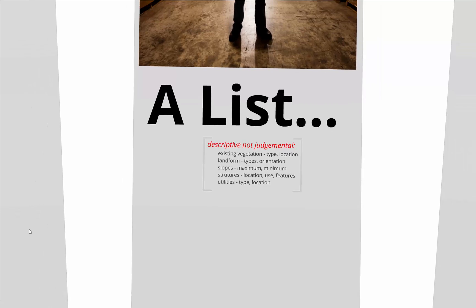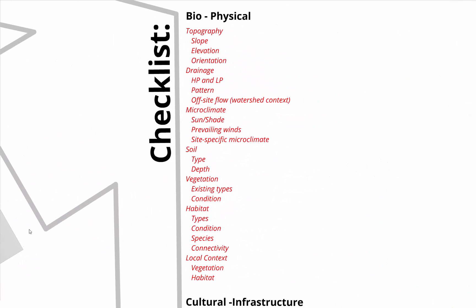The more thorough your inventory list is, the more you have to work with when you start making judgments in your analysis. We look at two categories. The first is biophysical — things like topography, drainage, microclimate, soil, vegetation, and habitat. For what we're doing, a lot of those probably aren't super critical; we're not going to make you deal with drainage, but understanding the basic flow of water and basic topography is good.